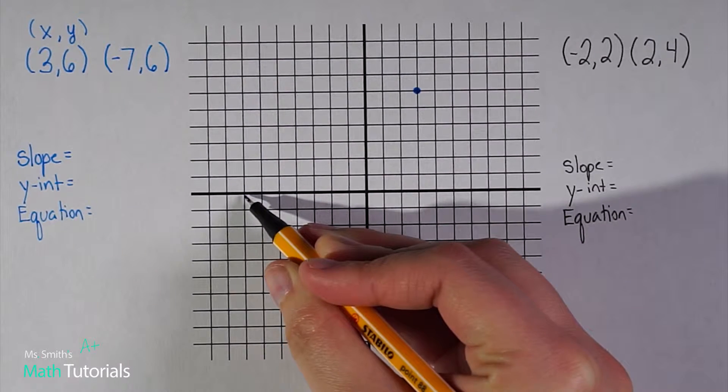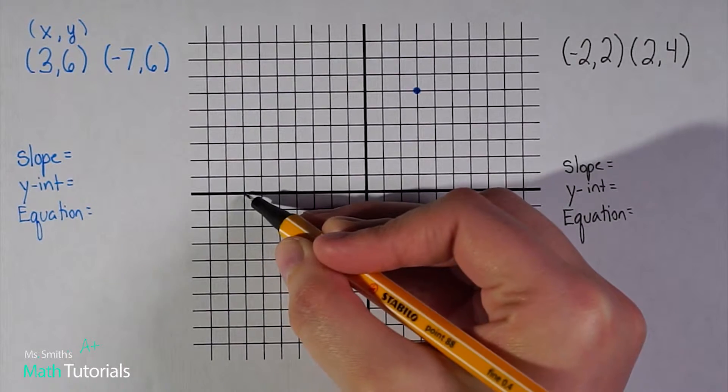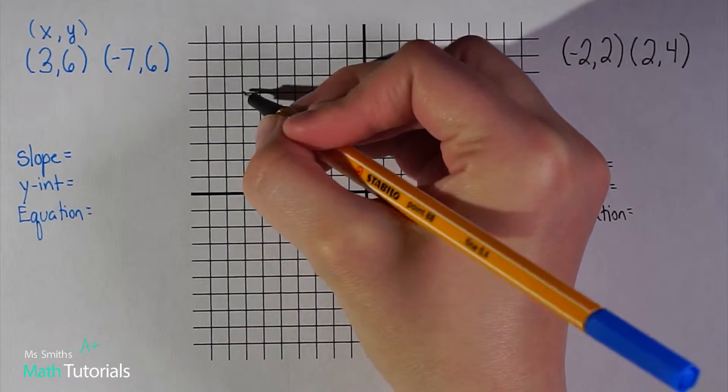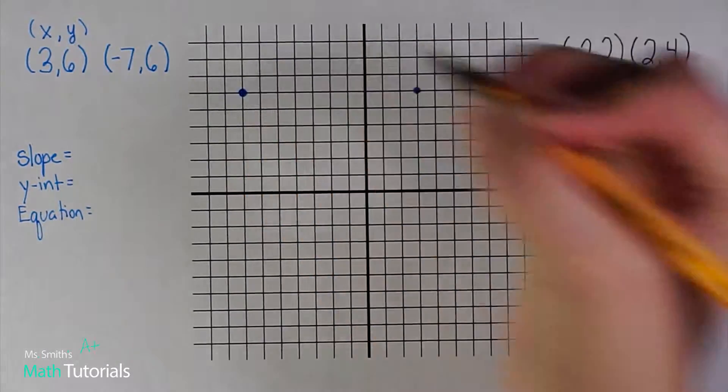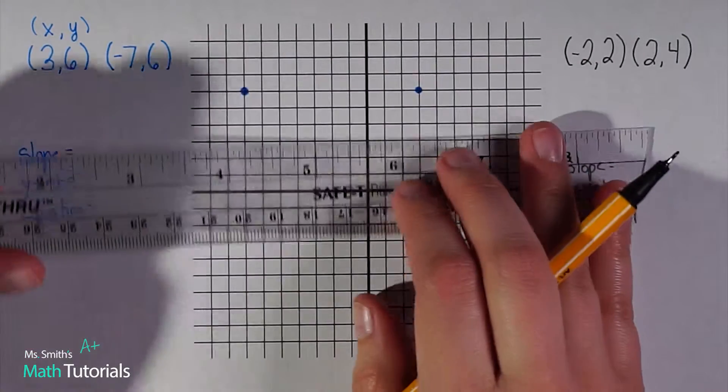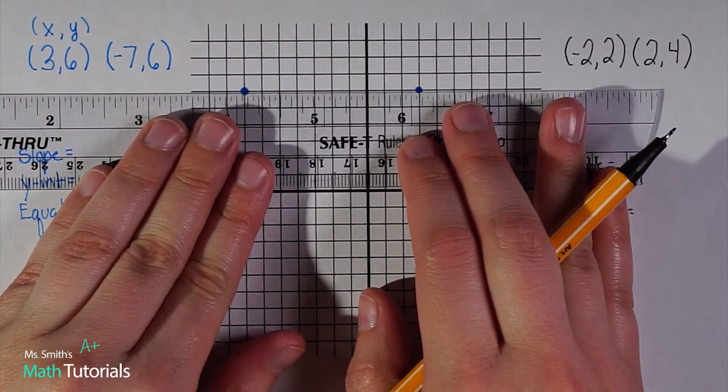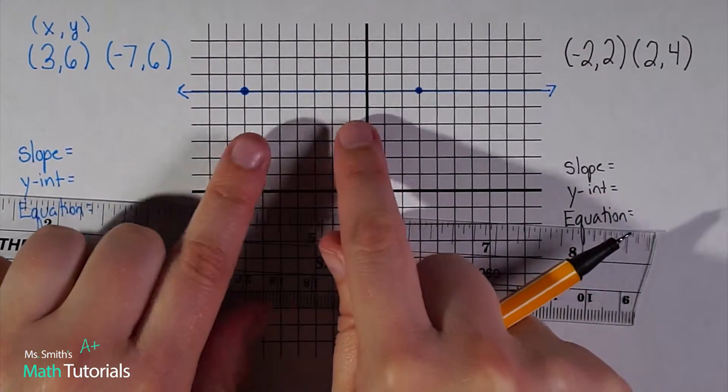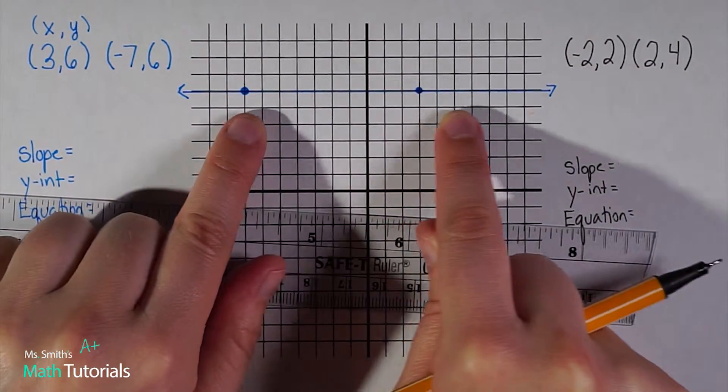My y is positive six, so I count up six: one, two, three, four, five, six. When I connect these into a line, you'll notice this forms a straight across line, which tells me something about my slope.